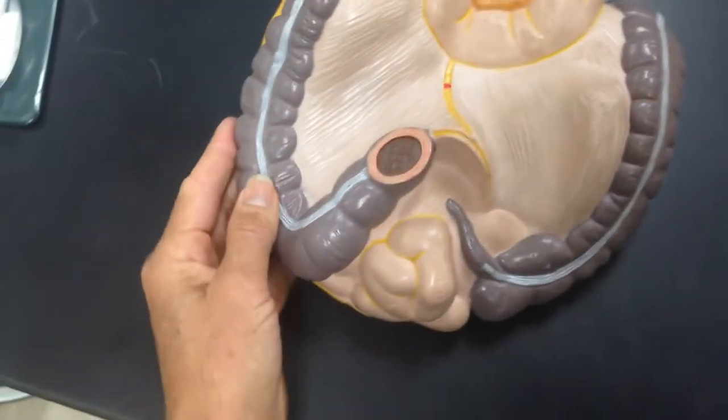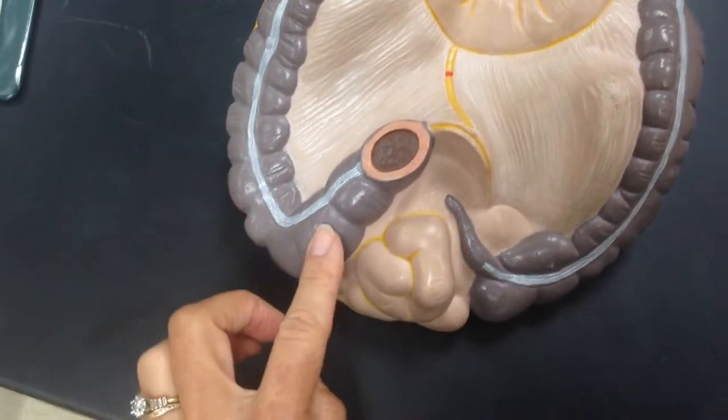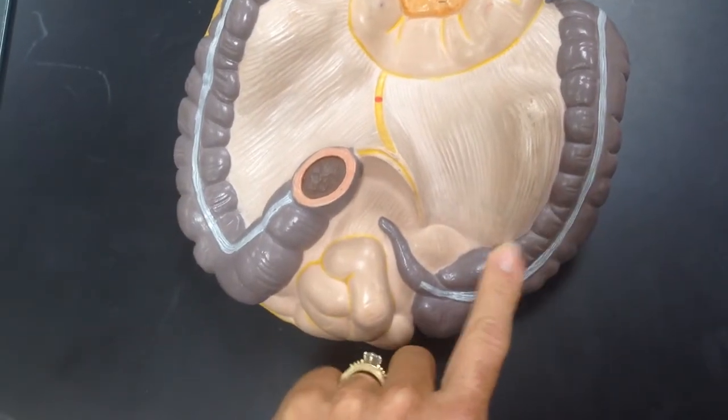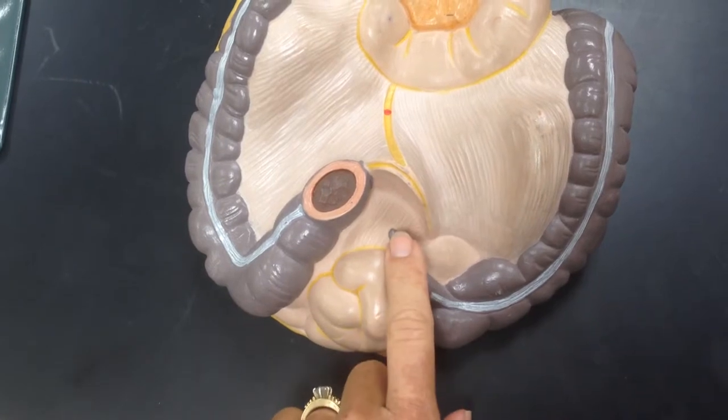If we turn it around from the descending colon, we have the sigmoid colon. On the ascending side, we have the cecum and the appendix.